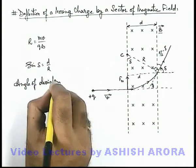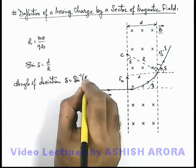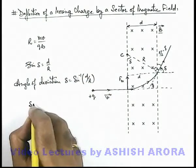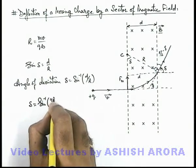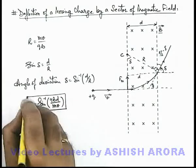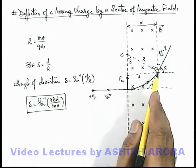Of charge particle by this sector can be given as sine inverse of d by r. If we substitute the value of r over here, delta we can write as sine inverse of qbd over mv. That is the total deviation suffered by the charge particle in its motion when it passes through the sector.